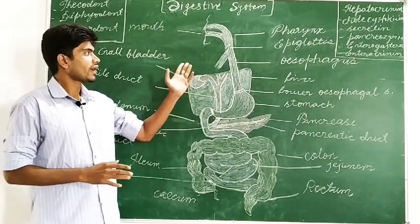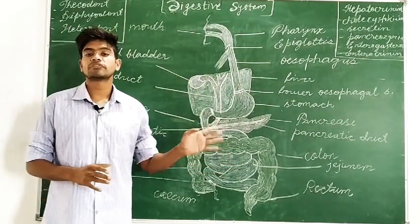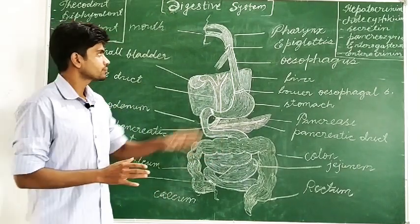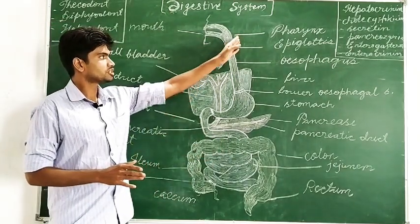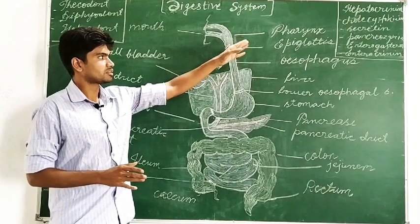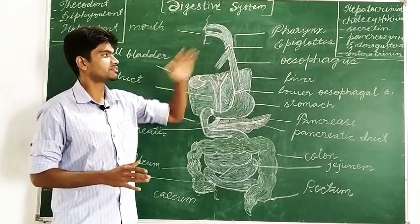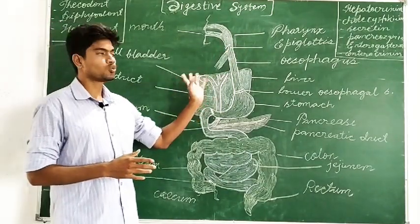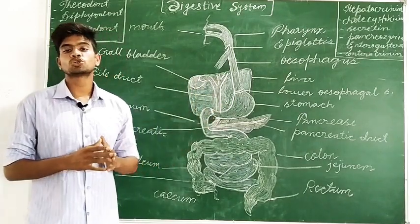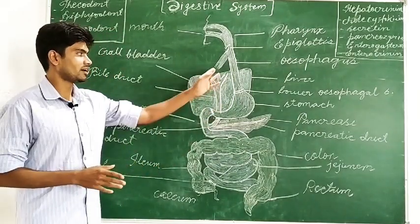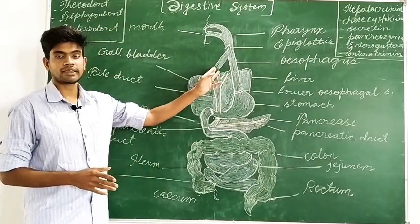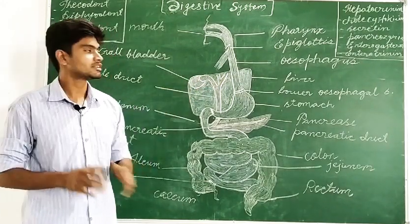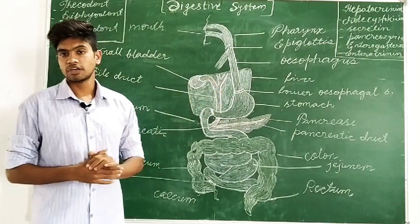Now we have different names for the different parts of the alimentary canal. The first part of the alimentary canal is called the pharynx. Later on, it gets divided into two parts — one part goes to the lungs, which is called the trachea, and the second part, which goes to the stomach, is called the esophagus.